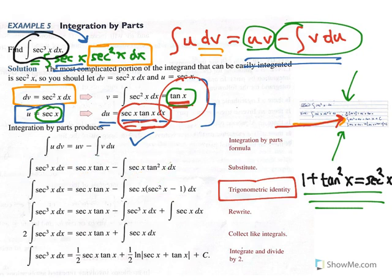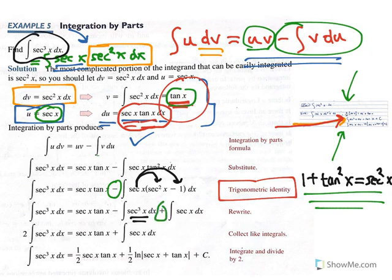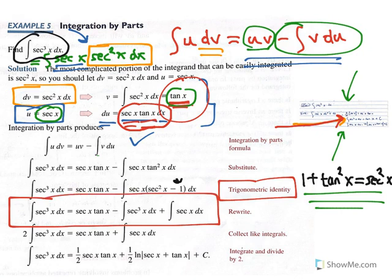After rewriting tangent squared x as secant squared x minus 1, we distribute secant x to each of those two terms, getting secant cubed x minus secant x. Then when we distribute the minus sign, that becomes minus the indefinite integral of secant cubed x, plus the indefinite integral of secant x dx. This is what we were talking about: somewhere in the process, a factor of the original integral appears in the work.